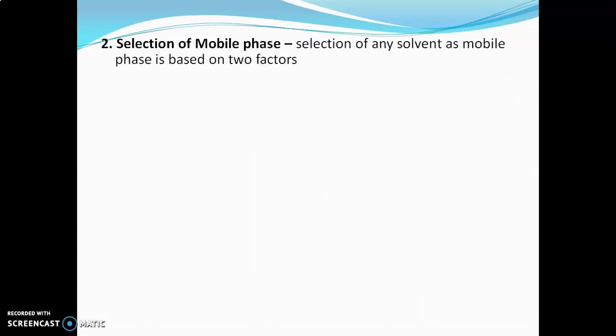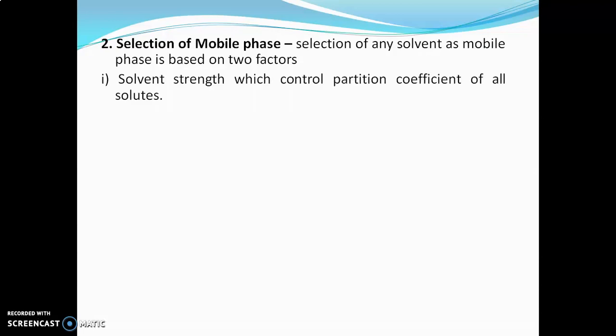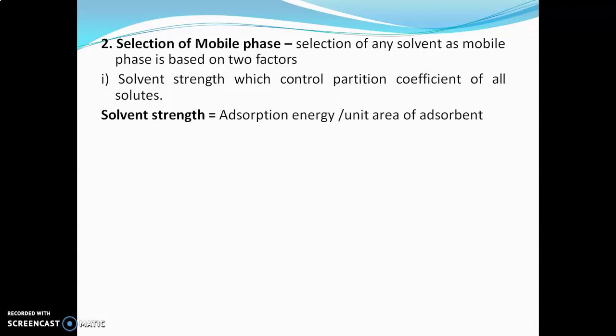The next step is selection of the mobile phase. Selection of any solvent as mobile phase is based on two factors. The first is solvent strength, which controls the partition coefficient of all solutes; the formula for solvent strength is adsorption energy per unit area of adsorbent. The second factor is the polarity of the solute mixture to be separated. Generally for polar samples, polar mobile phases are selected, and for non-polar samples, non-polar mobile phases are selected.